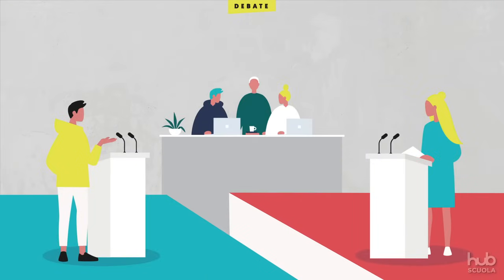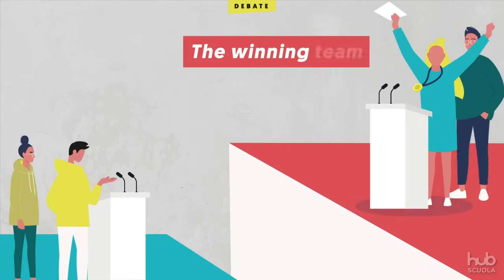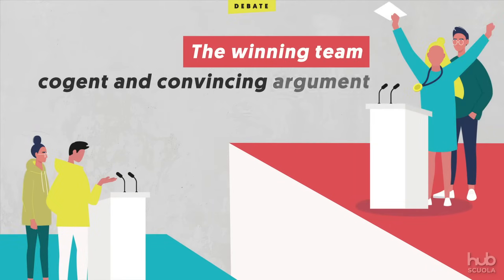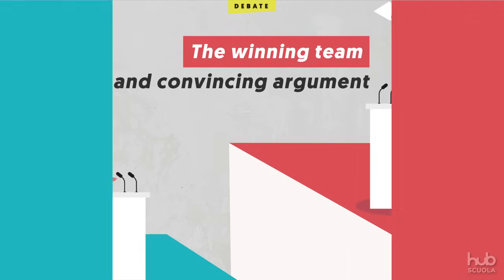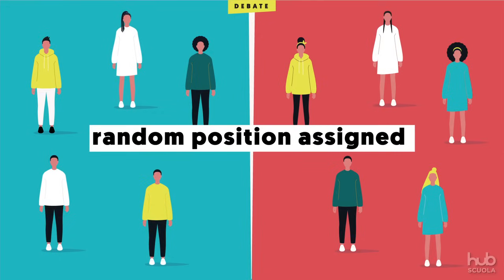At the end of the debate, a neutral third party — usually a judge or committee — will decide the winner. The winning team is the team that delivers the most cogent, convincing argument. Whether the judge personally agrees with the motion is not relevant. In fact, teams are typically assigned their position at random, which means they may need to debate in favor of a motion with which they personally disagree.